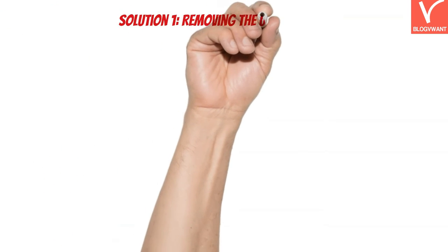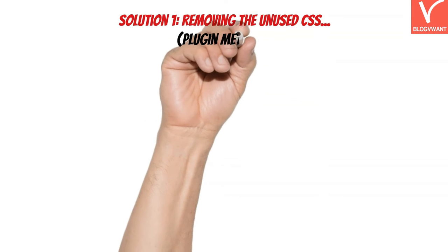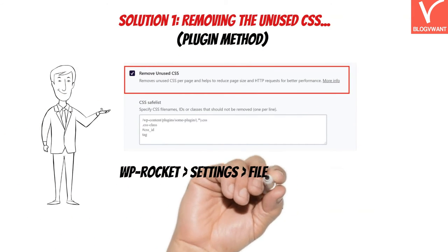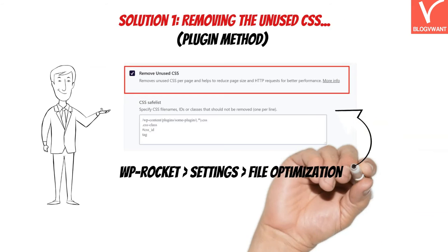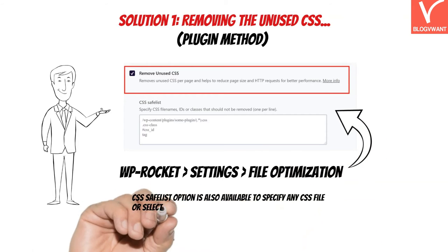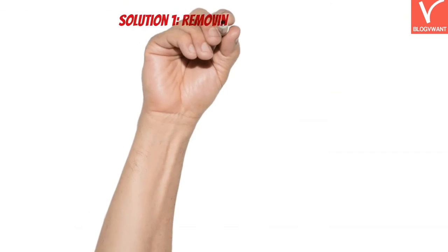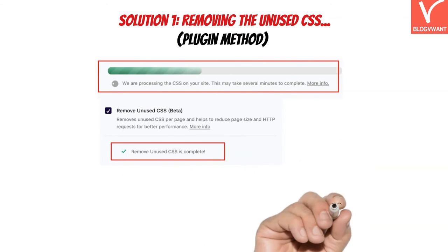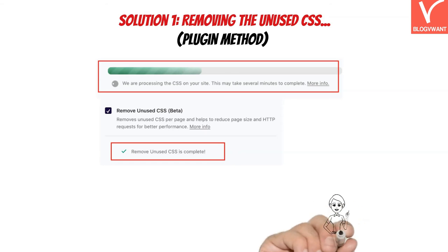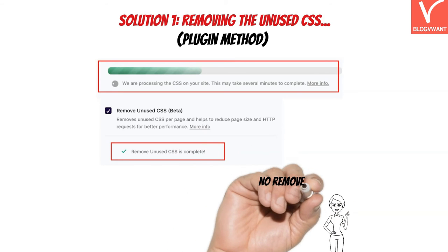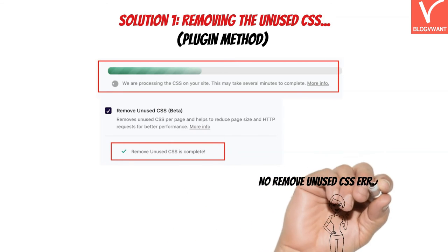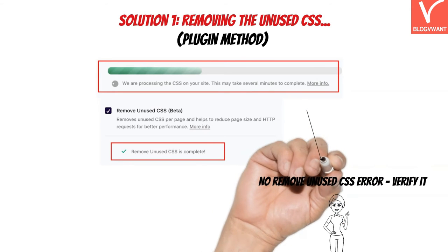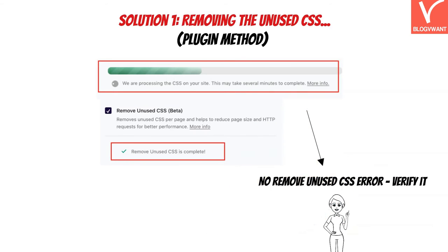After installing the WP Rocket plugin on your WordPress site, navigate to WP Rocket settings and choose the File Optimization tab. Here you will find the Remove Unused CSS option — just enable it and you are good to go. WP Rocket will start the removal process, which may take some time depending on the CSS applied across the whole website. When the process completes, you will see a confirmation message. After that, verify in the Google PageSpeed Insights tool whether the unused CSS error is still present.